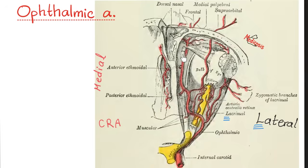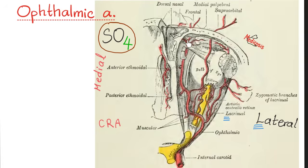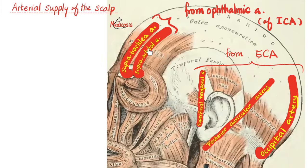What's the name of the muscle that passes through the trochlea? The superior oblique — and that's why it's supplied by the trochlear nerve. Don't forget that the trochlea is medial, but the lacrimal gland is lateral. The supratrochlear artery is more medial than the supraorbital. For the arterial supply of the scalp: supraorbital and supratrochlear are both branches of the ophthalmic artery, which is a branch of the internal carotid. Also supplying the scalp are the superficial temporal, posterior auricular, and occipital arteries — all branches of the external carotid.